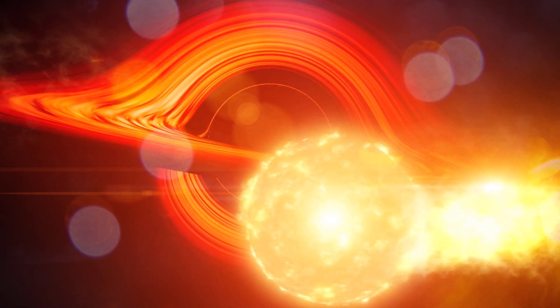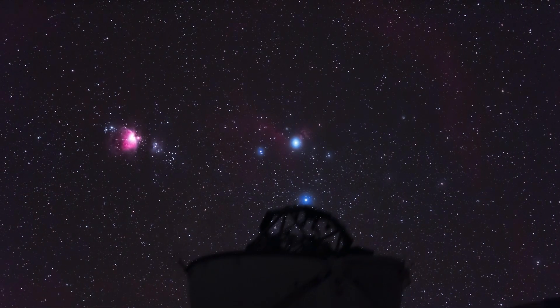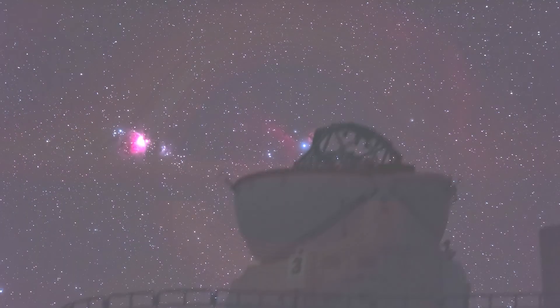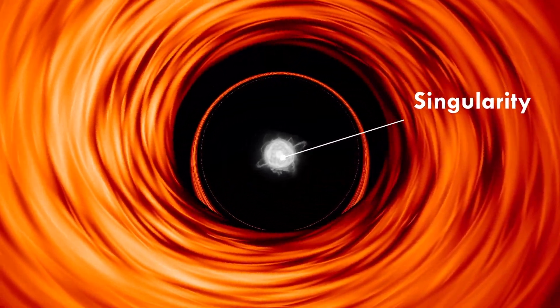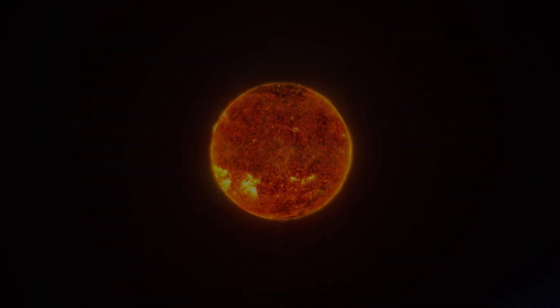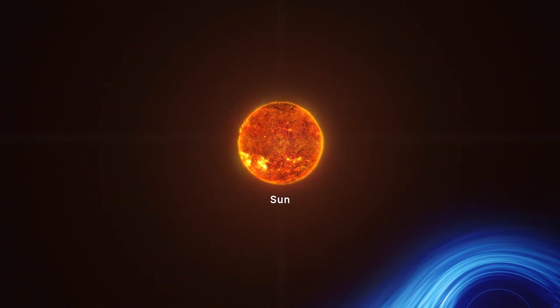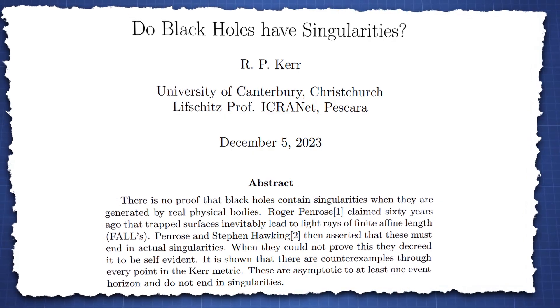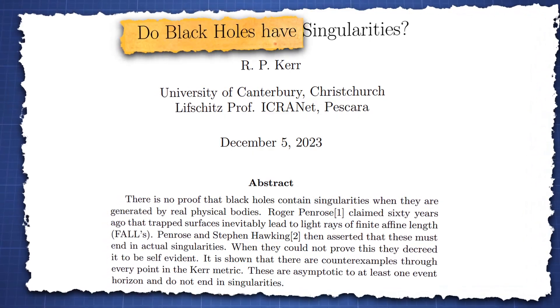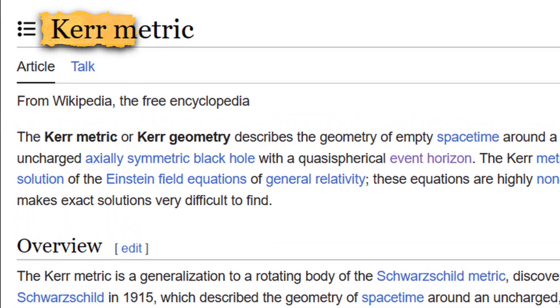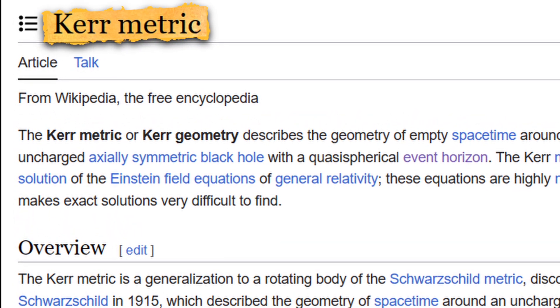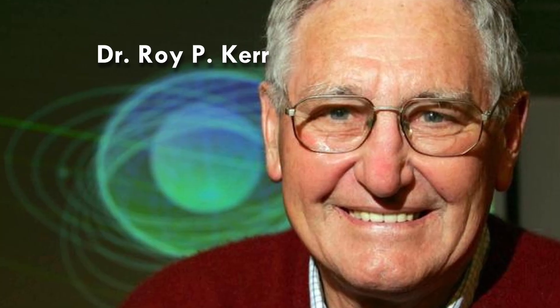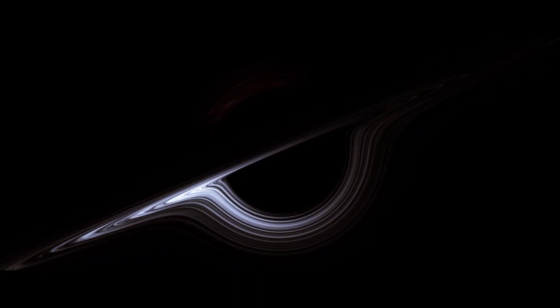A completely new approach suggests that in physical reality, it's quite likely that singularities do not exist. Instead, all black holes possess something entirely different. A new paper simply titled 'Do Black Holes Have Singularities?' by Dr. Roy Kerr — a mathematician from New Zealand who has an entire metric named after him — answered the question.